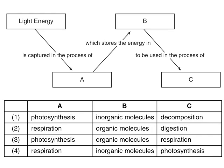Here's a flow diagram — pause and fill in what A, B, and C are. It says: 'Light energy is captured in the process of A, which stores the energy in B, to be used in the process of C.' The answer is three: A is photosynthesis, B is organic molecules, and C is respiration.